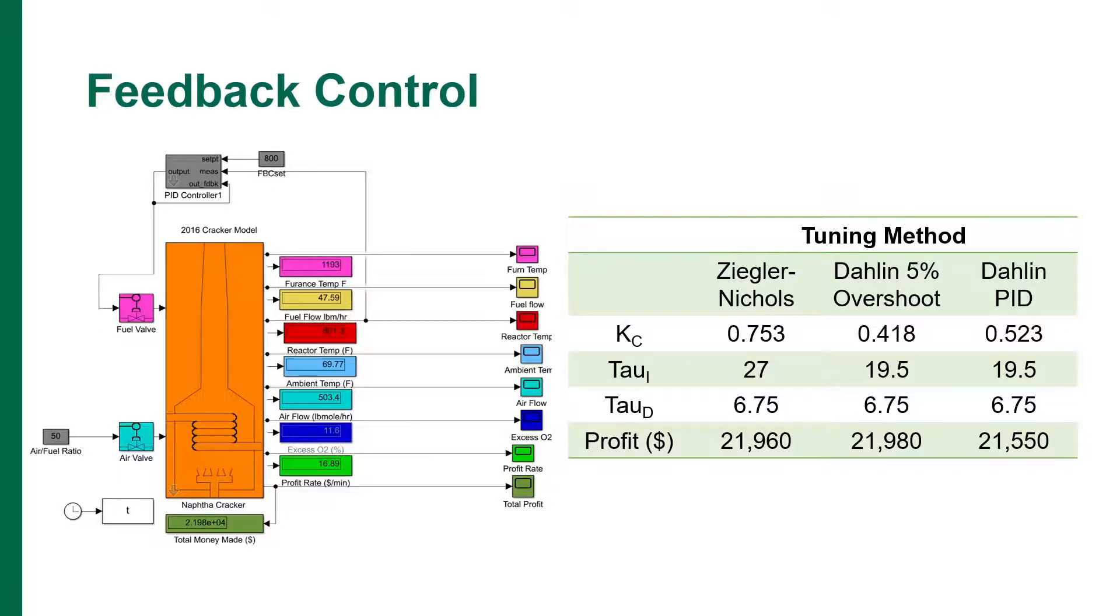The three tuning methods we used to compare the parameters are tabulated on the right, where the obtained tuning constants and daily profits are quantified. The Dahlen 5% overshoot method resulted in the higher daily profit, which was found to be $21,980.